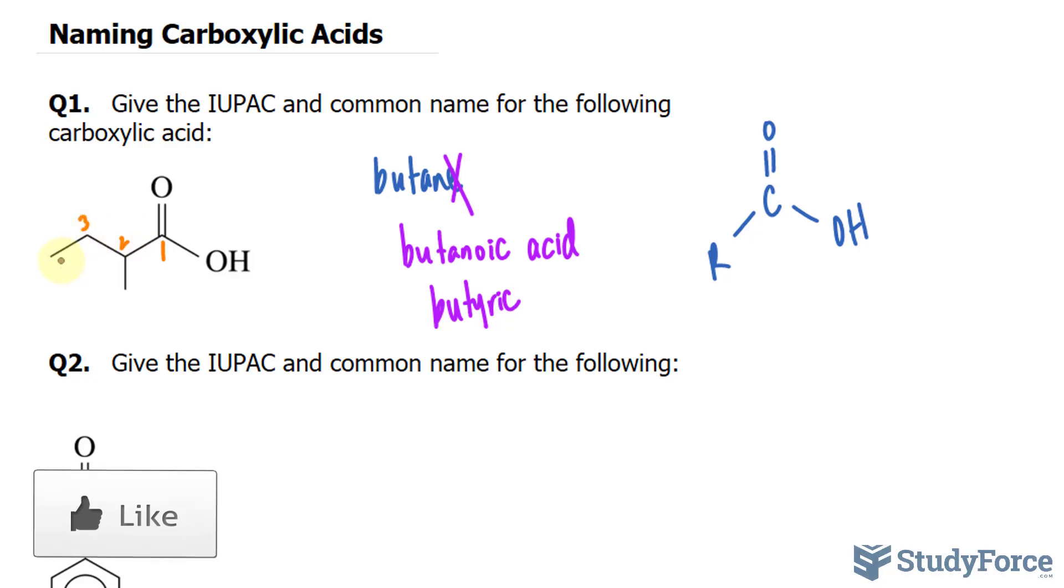So we have one, two, three, and this is your fourth carbon. Methyl is at the second carbon, so we can say 2-methyl butanoic acid.